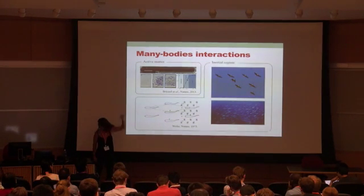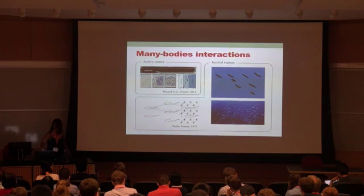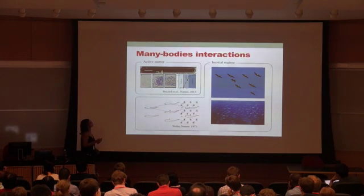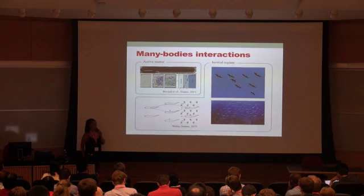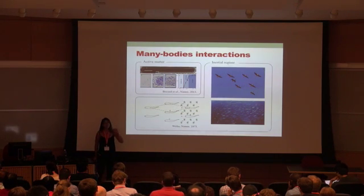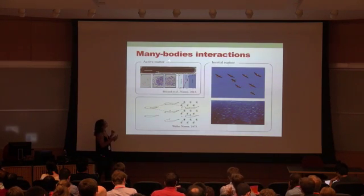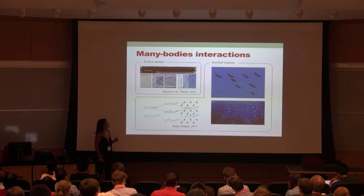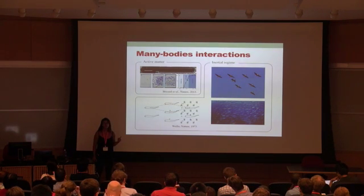This is a striking example here from the Bartholomeusz group where they have a bunch of particles that move randomly inside an arena. And at some point the whole group self-organized and they start all moving in the same direction. Active matter has been a pioneer in such systems of many-body interactions. They've been looking at systems in the low Reynolds number regime.